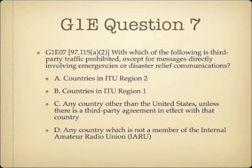Question 7. Which of the following is third party traffic prohibited, except for messages directly involving emergencies or disaster relief communications? A, countries in ITU Region 2; B, countries in ITU Region 1; C, any country other than the United States unless there is a third party agreement in effect with that country; or D, any country which is not a member of the International Amateur Radio Union?